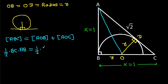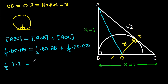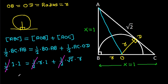Area of triangle ABC equals one half times base BC times height AB, which equals one half times BC times AB, equals one half times base AC times height OD. So one half times 1 times 1 equals one half times 1 plus one half times root 2 times r. Cancelling one half, we get 1 equals r plus root 2 times r.